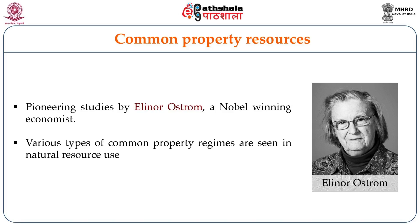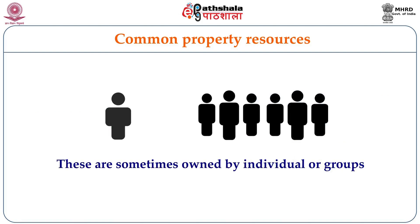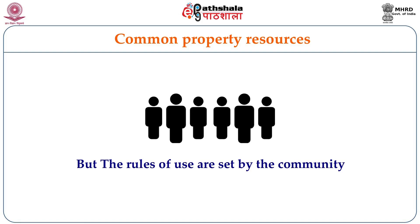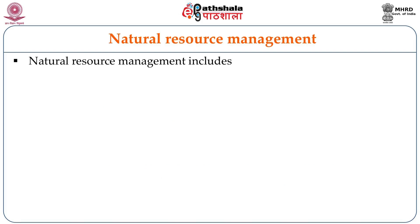Various types of common property resources are seen in natural resource management. Examples include common grazing lands in villages, ponds, rivers and beaches used by people in the village. Threshing grounds where different kinds of agricultural practices are done are also common lands. Community forests are also present in many areas. These areas are sometimes owned by individuals or groups, but the decisions and rules about use are made collectively by the entire community, enforced through cultural practices, with conflicts resolved through community decision-making.